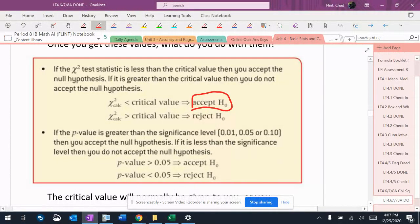If the chi-squared value that you get is bigger than the critical value, then you reject the null hypothesis, and that would mean that they are dependent.